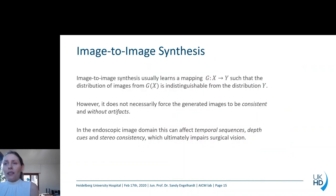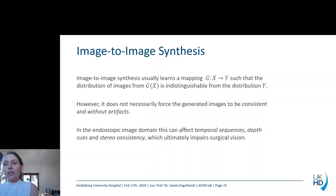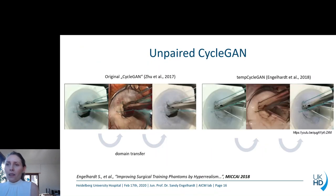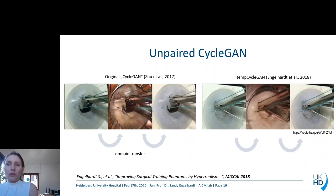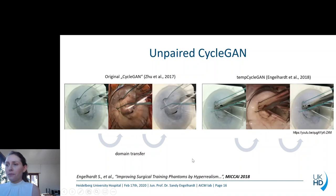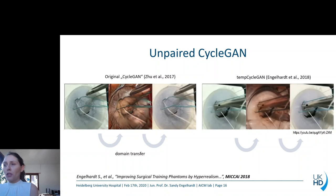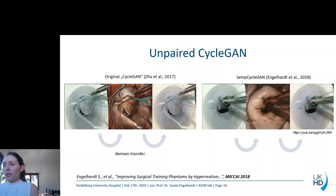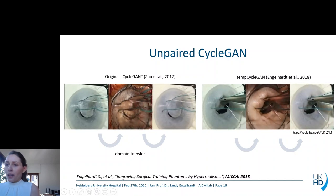In image-to-image synthesis, this usually learns a mapping G from X to Y such that the distribution of images from G(X) is indistinguishable from the distribution Y. However, that does not necessarily force the generated images to be consistent and without artifacts. In the endoscopic domain, this can affect temporal consistency, depth information, and stereo consistency, which ultimately impairs surgical vision. If we apply the original CycleGAN to a video stream, we would observe a lot of flickering, as can be seen on the left-hand side. Therefore, we came up with a novel approach that reduces this inconsistency, and more details can be found in the corresponding publication.